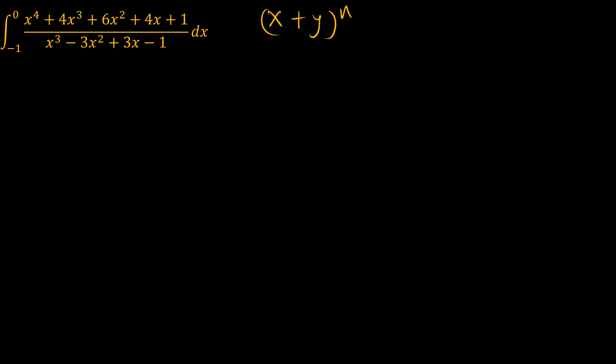A binomial expansion generally can be taken to be something like x plus y to the power n. Such that when n equals 0, the coefficient is 1. When n equals 1, you have two coefficients: 1 and 1. So x plus y to the power of 1 is x plus y. When n equals 2, you have 1, 2, 1 — giving x squared, coefficient 1; 2xy, coefficient 2; plus y squared, coefficient 1.